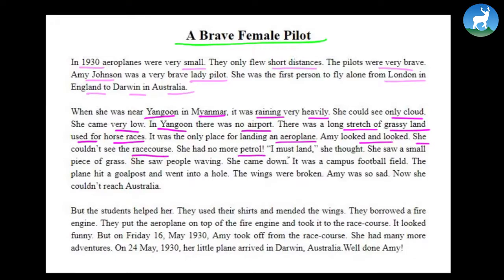She had no more petrol. I must land, she thought. She saw a small piece of grass. She saw people waving. She came down. It was a campus football field. The plane hit the goal post and went into a hole. The wings were broken. Amy was so sad. Now she couldn't reach Australia.